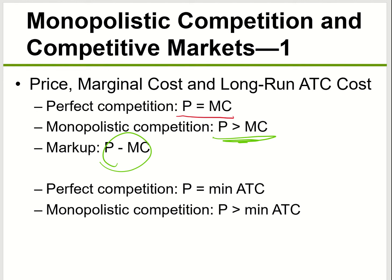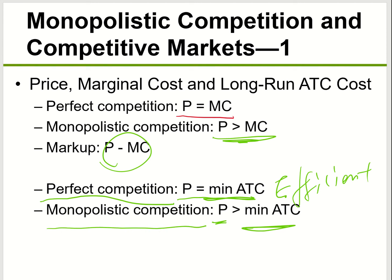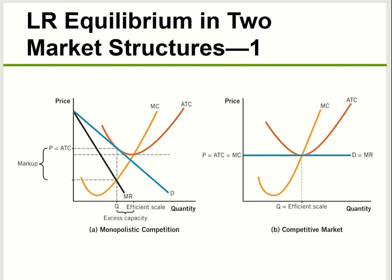For perfect competition, price is equal to the minimum average total cost. But for monopolistic competition, price is more than the minimum average total cost. So perfect competition is more efficient because companies produce at a lower average total cost. In perfect competition, marginal cost equals marginal revenue at the lowest point of average total cost. In monopolistic competition, the long-run equilibrium is not at the minimum average total cost, so price is more than the minimum — making the market less efficient.